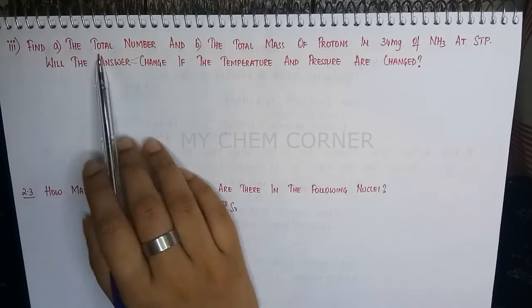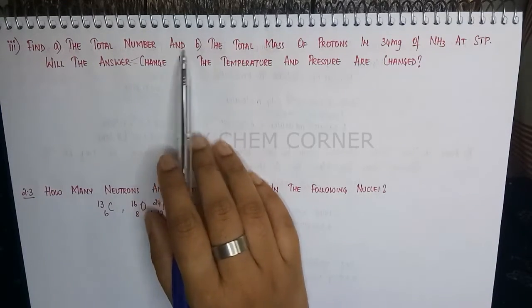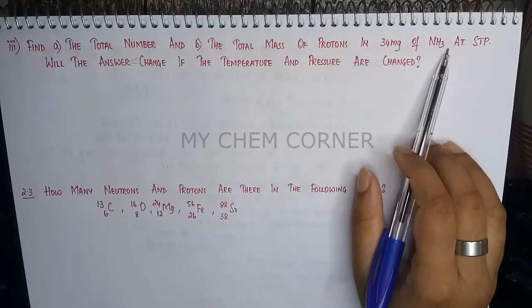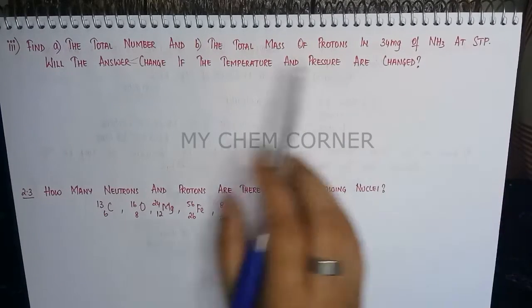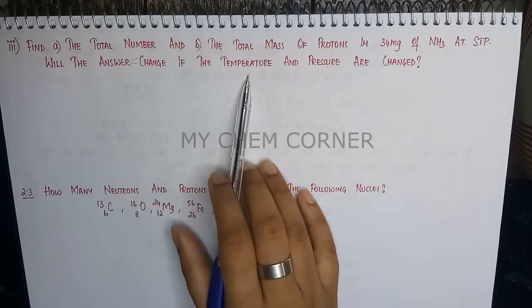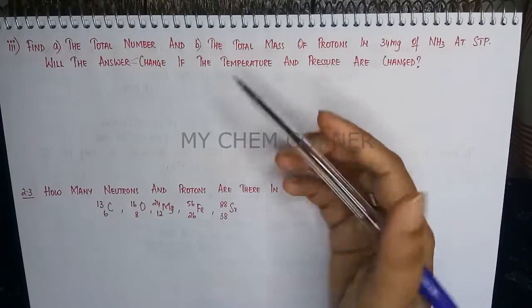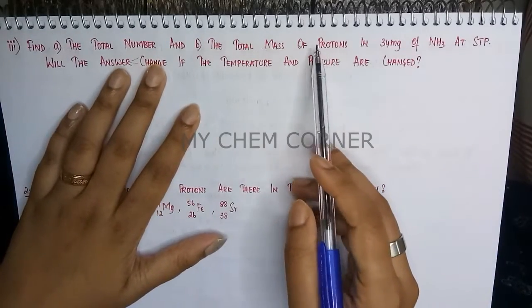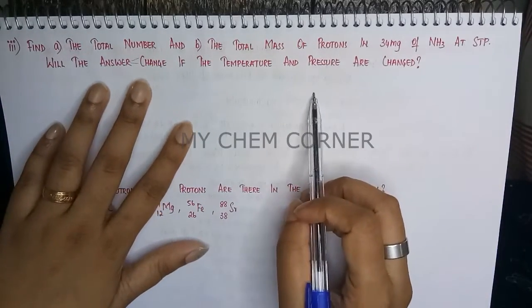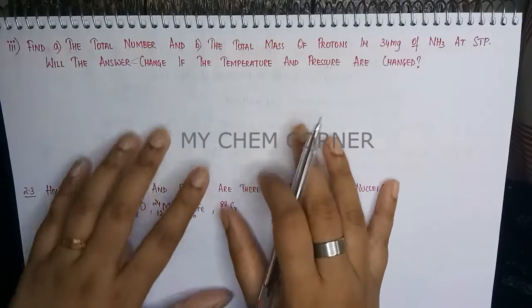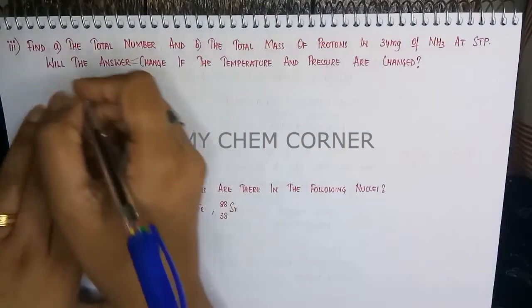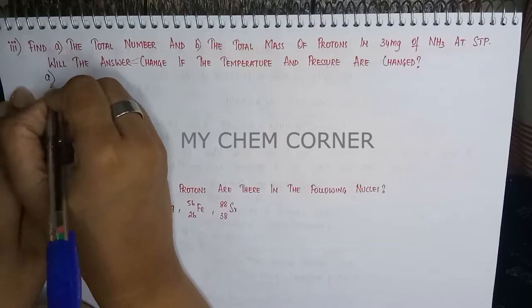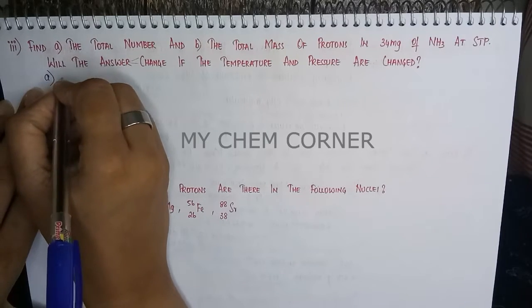The next question is: find the total number and total mass of protons in 34 milligrams of ammonia at STP. Will the answer change if temperature and pressure are changed? This is similar to the previous question, which was about neutrons. In this case we are dealing with protons, so the method of solving is going to be the same.